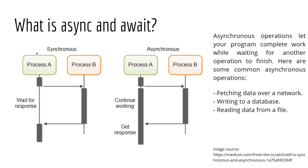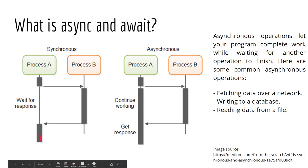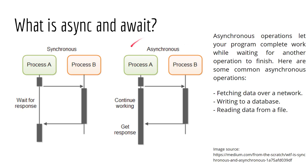On the left side you can see a synchronous operation. We have process A and then we go to process B, and when it is completed we go back to process A and continue. In this interval we wait for the response from process B. But in an asynchronous operation, when process A reaches the point where it calls process B, we continue working on process A and don't wait for process B to finish. After process B is finished, the result is received by process A and the operation is completed.